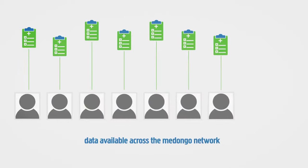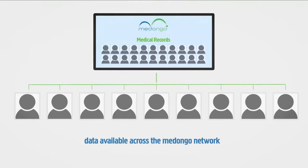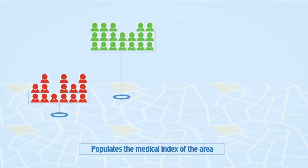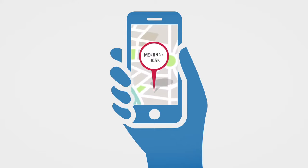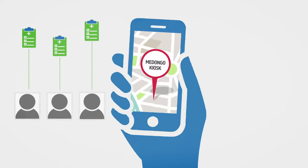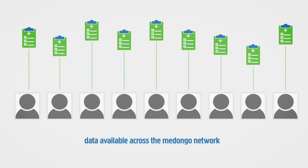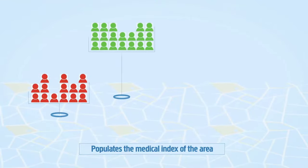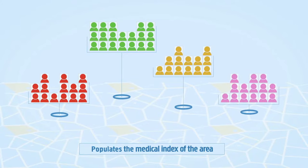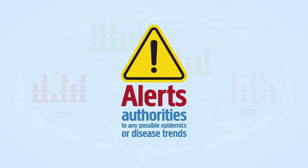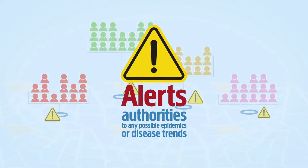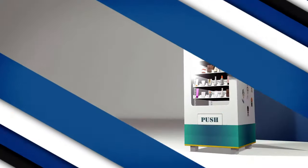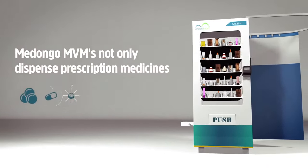Patient data is available at all Midongo kiosks via the cloud, and all smartphone users can access their records and Midongo kiosk locations through their phone. Through access to data available across the Midongo network, the Midongo analytic tool also helps monitor the health index of the patient population and alert authorities to any possible epidemics or disease trends.